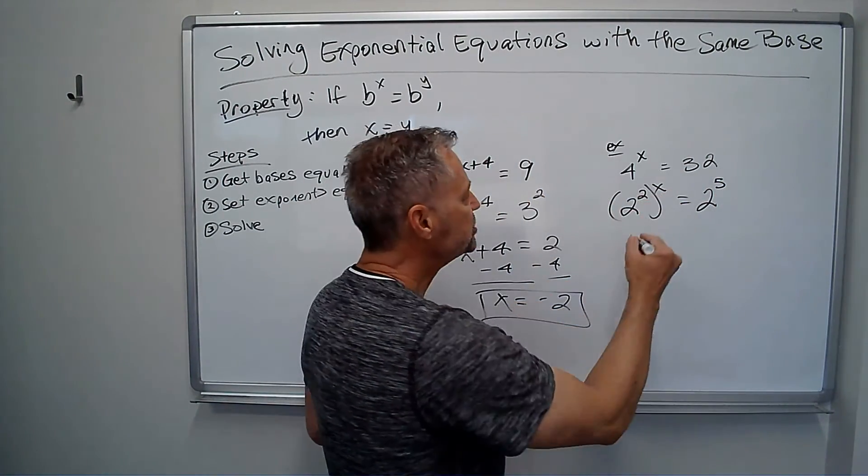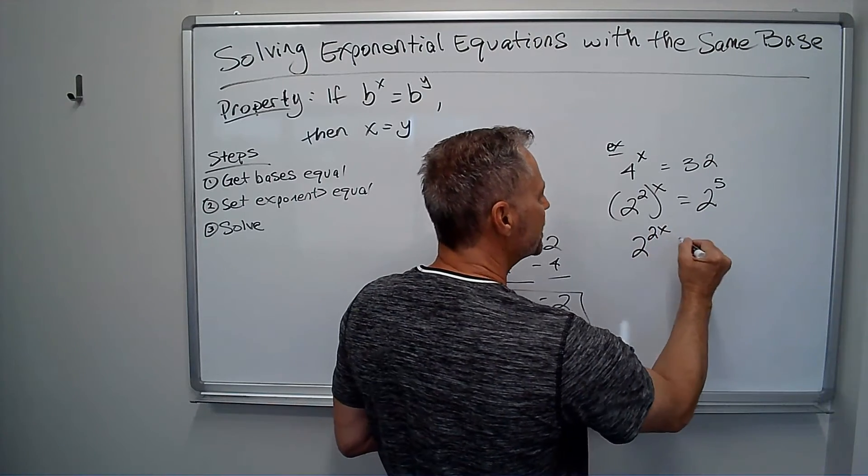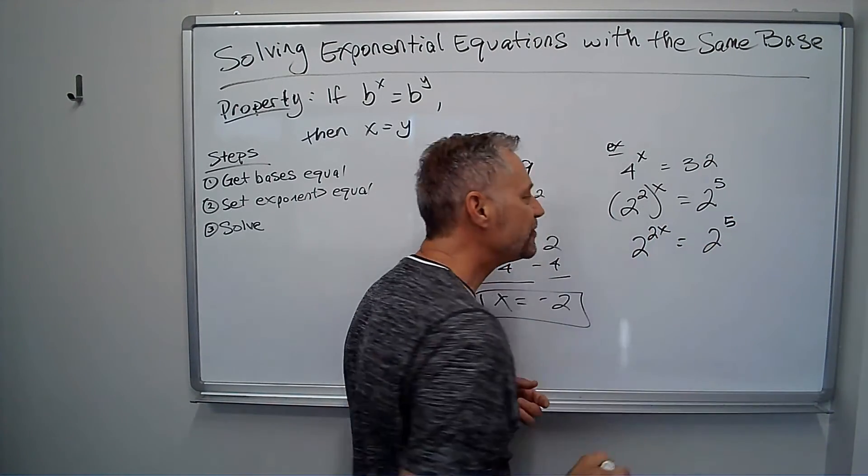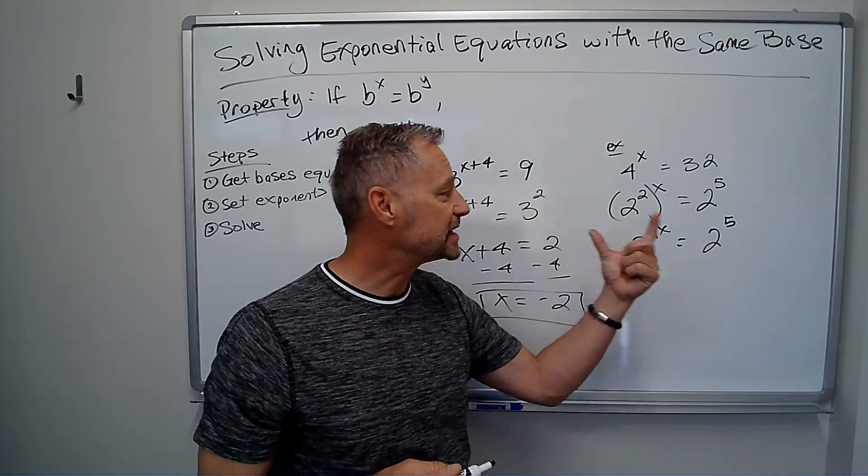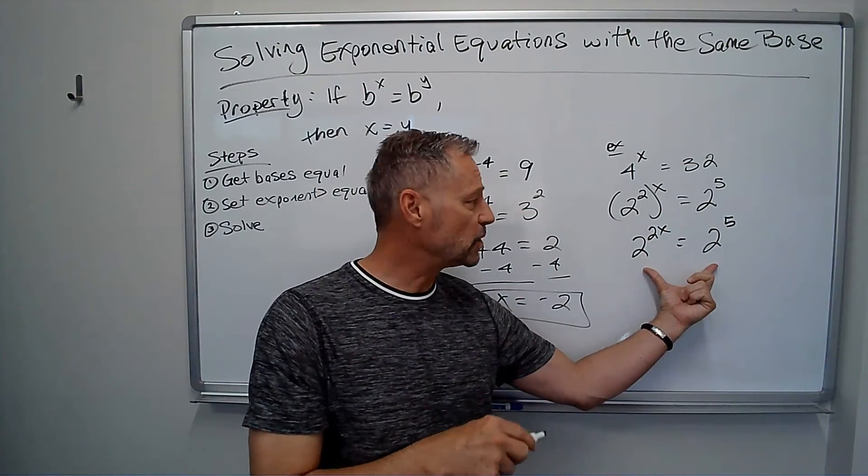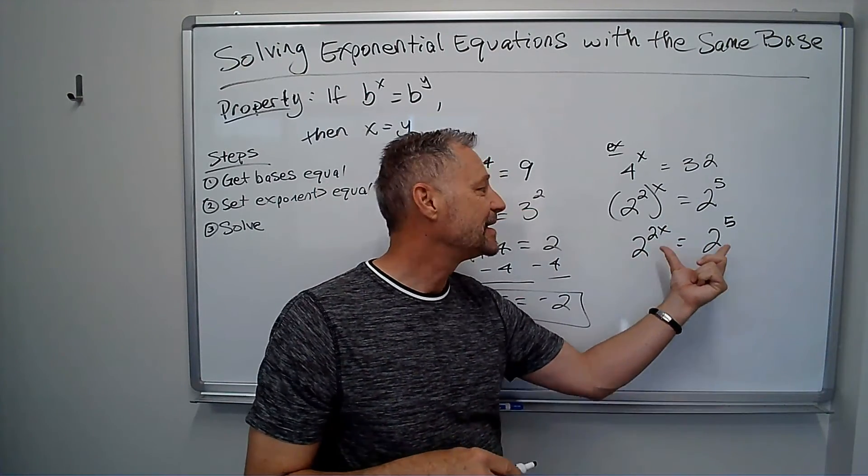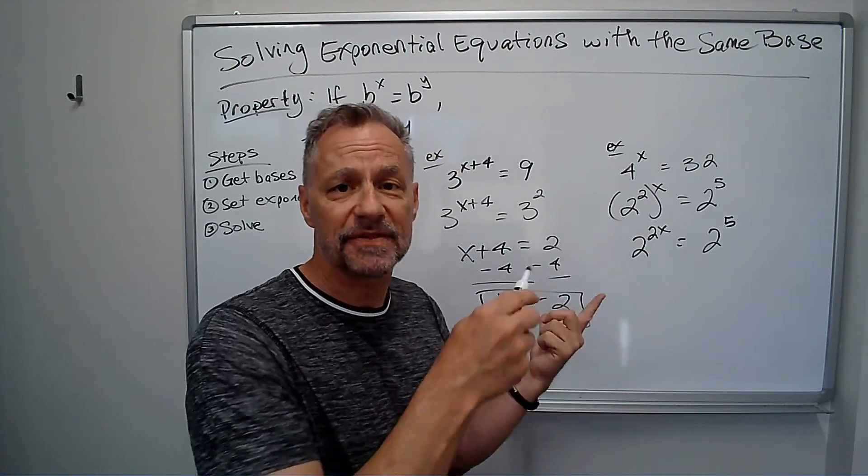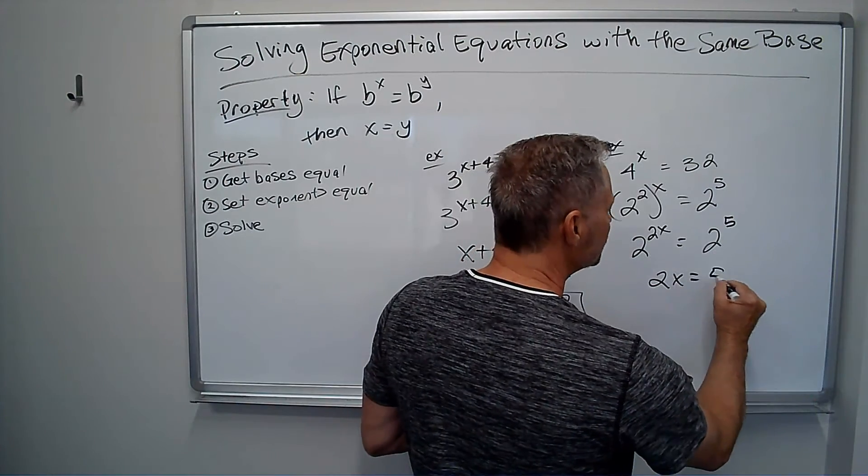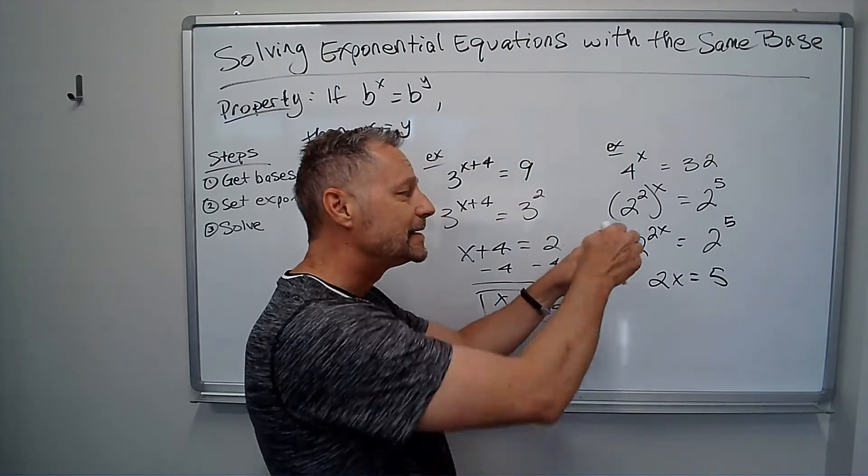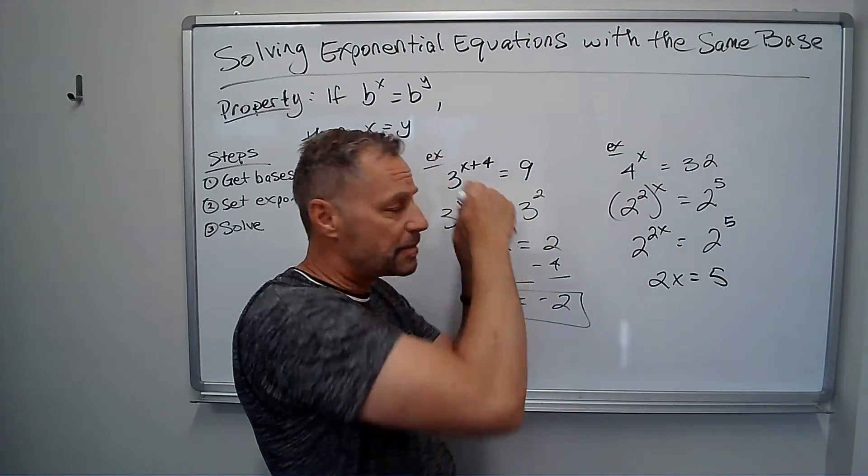And remember here, power 2, power x, multiply those, so that's 2 to the 2x equals 2 to the 5th. Now I can use the property again. If these two sides are equal and they both have the same base, they can only happen if the exponents are equal. So I know from there, 2x equals 5. Again, not dividing by 2, using that property.